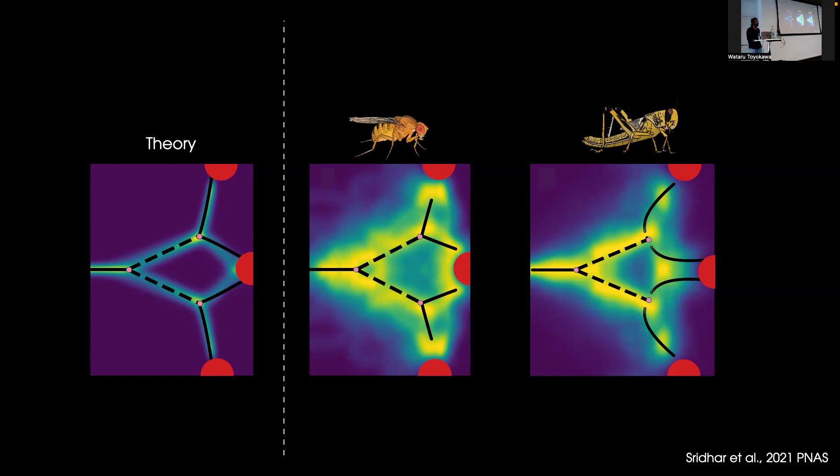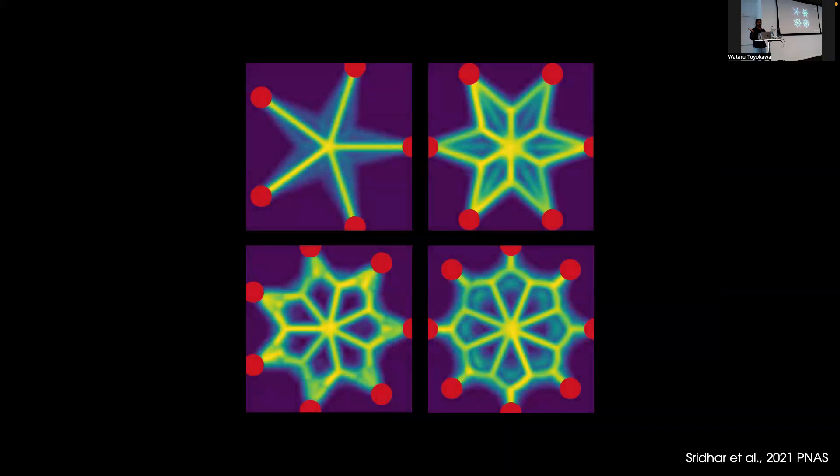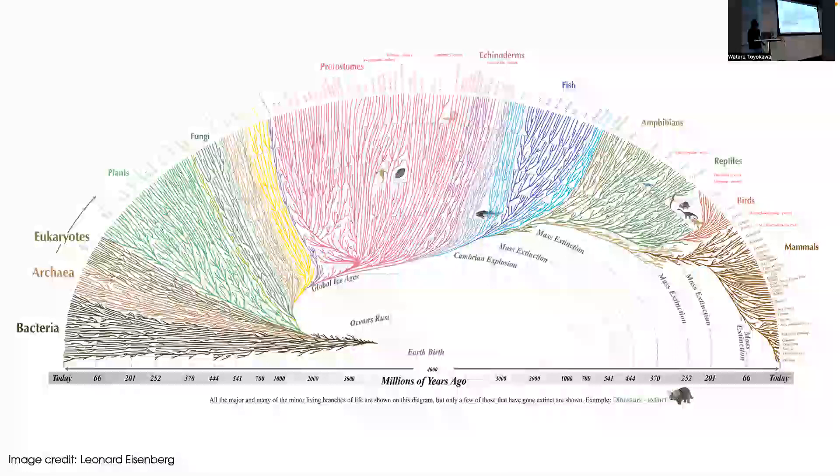This works with an arbitrary number of options. Here you see the trajectories that are predicted up to eight options, and these bifurcation processes seem to repeat themselves.